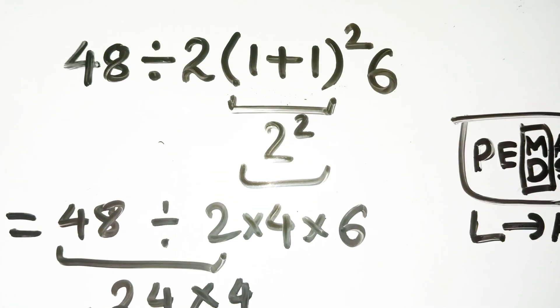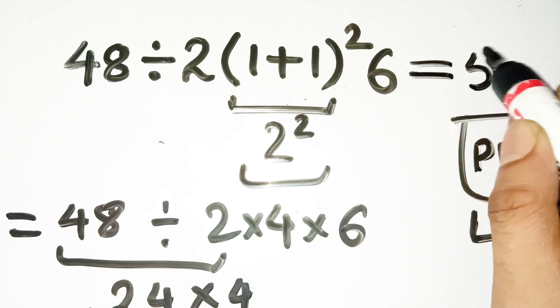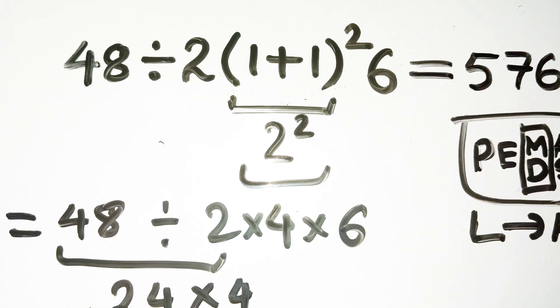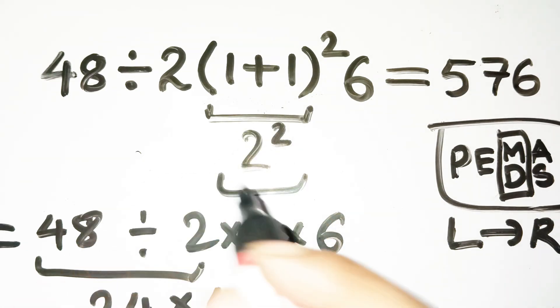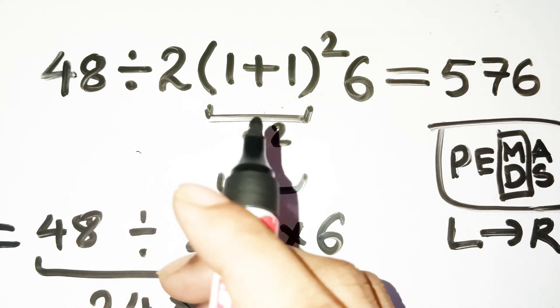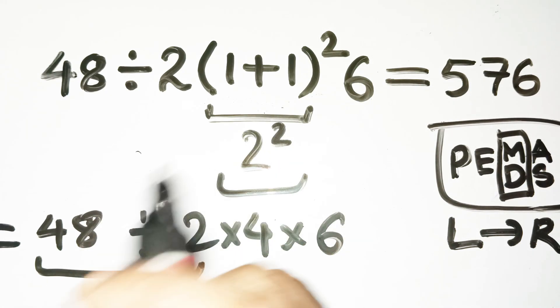Yeah, that's a massive difference. You see, the biggest trap is assuming that the 2 beside the bracket automatically sticks to it like multiplication inside a glue trap. But mathematically, division doesn't care. It's equal in rank. Once you follow left to right, the whole thing changes.